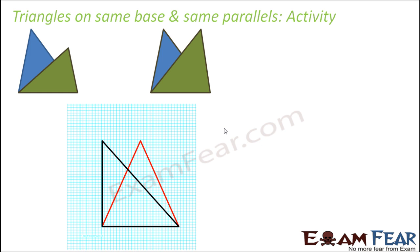So let us do an activity. Let us draw two triangles on graph paper, one in black, and they should share the same base. So in this case they are sharing the same base as AB. We have two triangles ABC and ABD, both having the same base. If we join these two points C and D, line CD should be parallel to AB. Thus they are two triangles on the same base and between the same parallels.